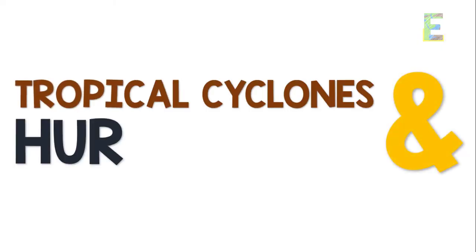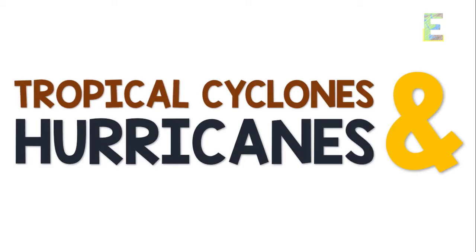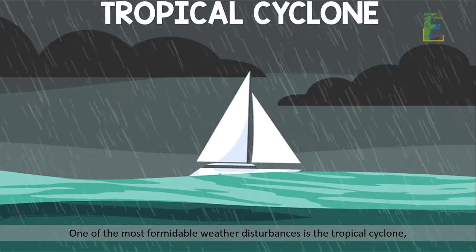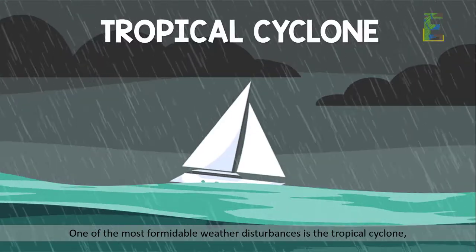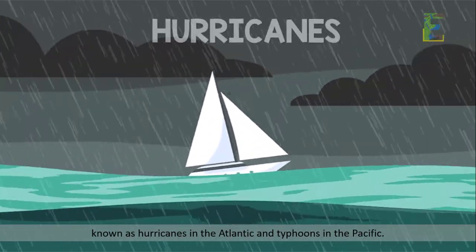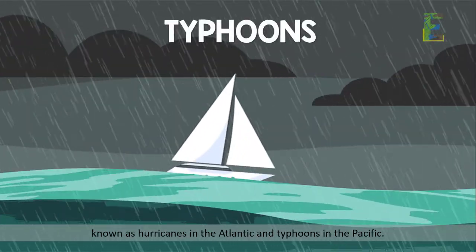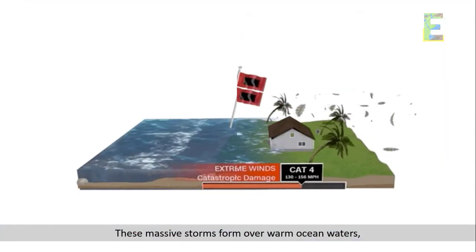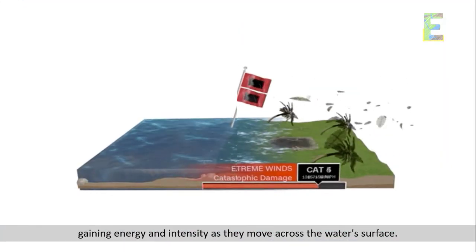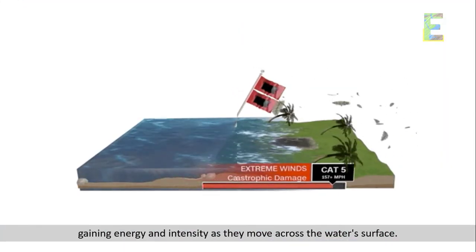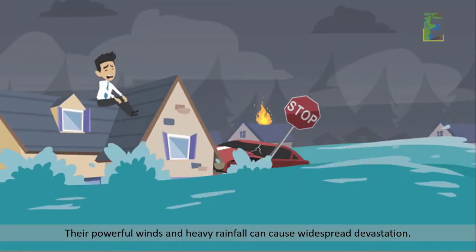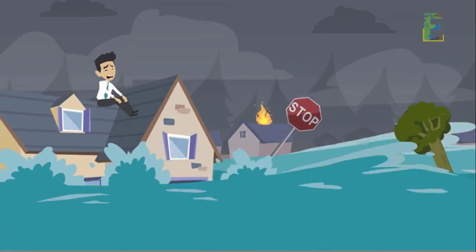One of the most formidable weather disturbances is the tropical cyclone — known as hurricanes in the Atlantic and typhoons in the Pacific. These massive storms form over warm ocean waters, gaining energy and intensity as they move across the water's surface. Their powerful winds and heavy rainfall can cause widespread devastation.